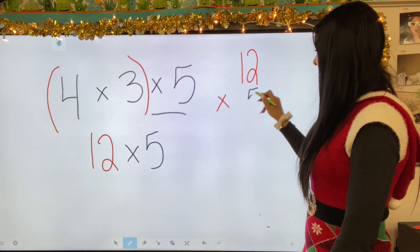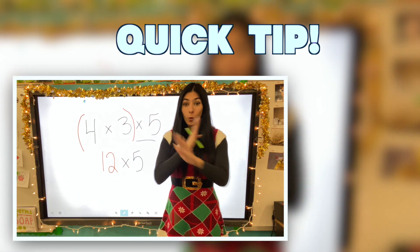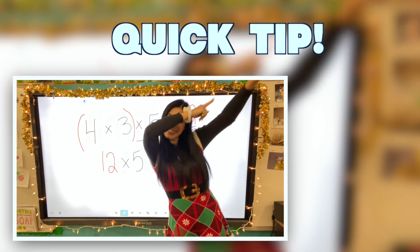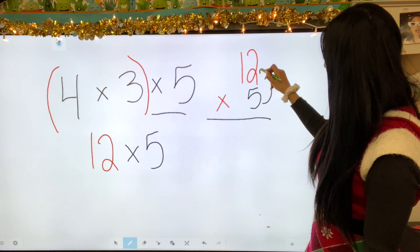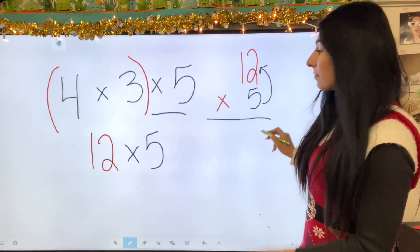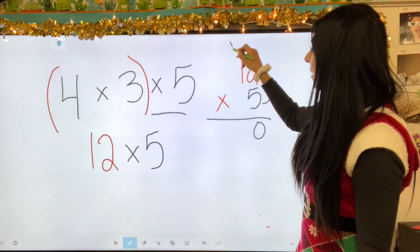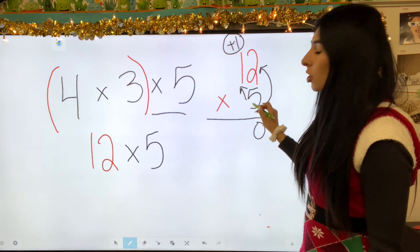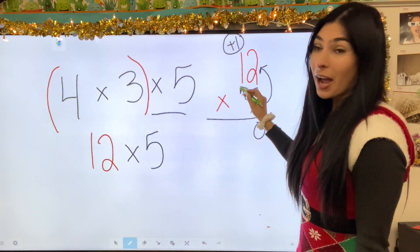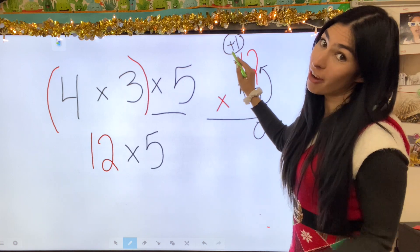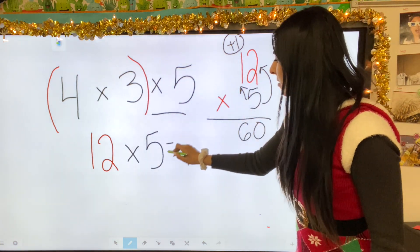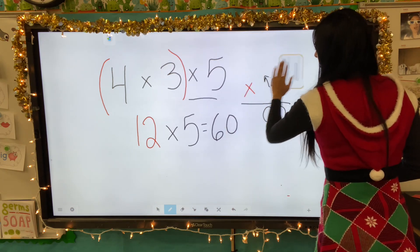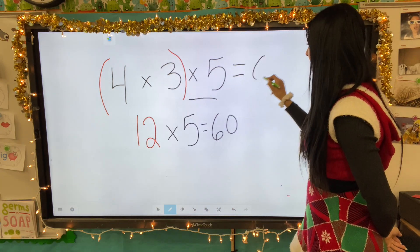Twelve times five. Quick tip: when you multiply vertically, we times up and we times diagonal. Times up: five times two is ten — put the zero and carry the one. Times diagonal: five times one is five, plus one carried is six. So our answer is sixty. Four times three times five equals sixty.